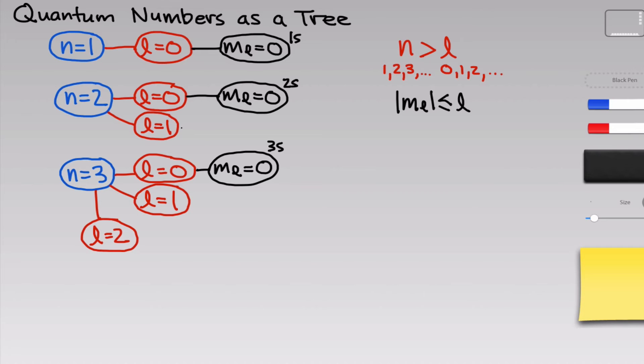We can play the same game for l equals 1 and see that m sub-l can now take on three values: negative 1, 0, and 1. And that holds true no matter what the value of n is. So for l equals 1 in the n equals 3 shell, we still have three allowed m sub-l's: negative 1, 0, and 1.